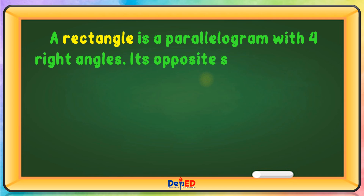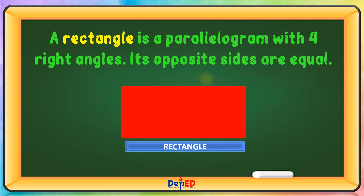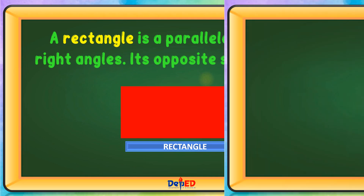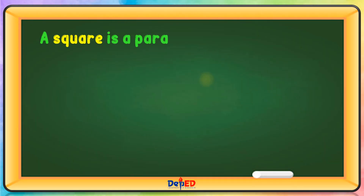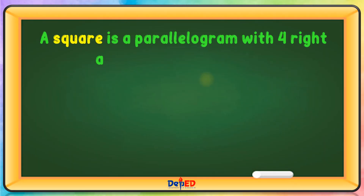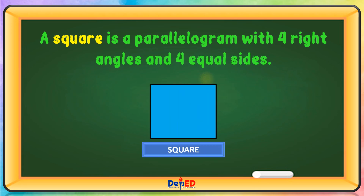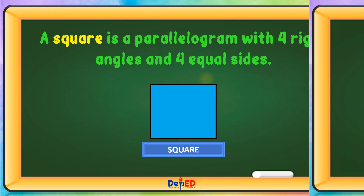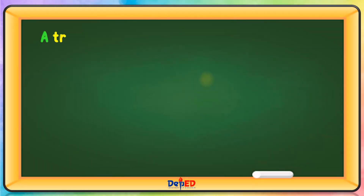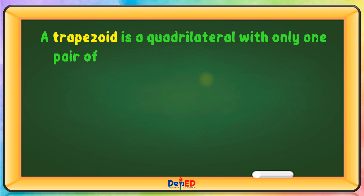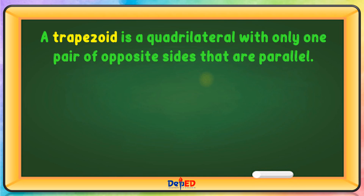Its opposite sides are equal. A square is a parallelogram with four right angles and four equal sides. A trapezoid is a quadrilateral with only one pair of opposite sides that are parallel.